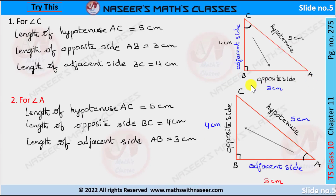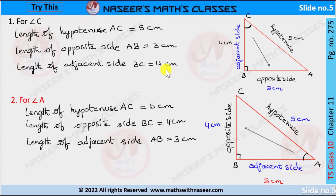With respect to angle C, AB is the opposite side, BC is the adjacent side, and AC is the hypotenuse. Therefore, the length of hypotenuse AC is equal to 5 centimeters, the length of the opposite side AB is equal to 3 centimeters, and the length of adjacent side BC is equal to 4 centimeters.